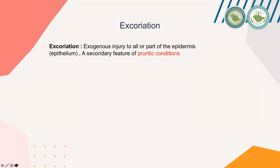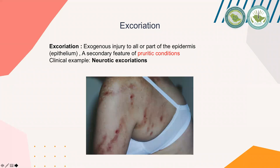Excoriation is an exogenous injury to all or part of the epidermis. It is a secondary feature of a pruritic condition. In excoriation, these kinds of lesions are caused by the patient to his own skin. A clinical example is neurotic excoriation, a psychological condition in which the patient intensely scratches his own skin, causing these kinds of lesions.